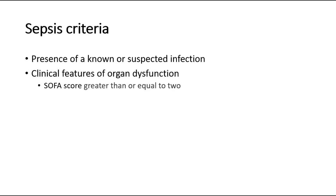The two required criteria are: presence of a known or suspected infection, and having clinical features of organ dysfunction, which can be quantified using the SOFA score. For a patient with a known or suspected infection, a SOFA score greater than or equal to 2 indicates sepsis.